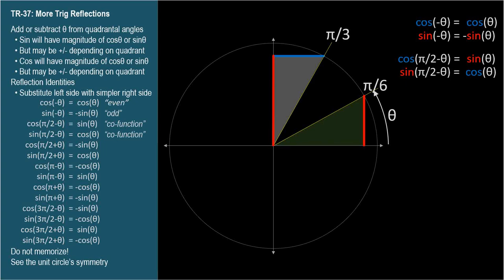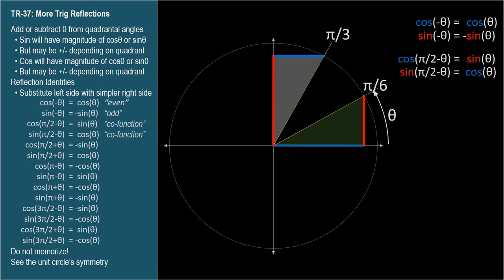The cosine of pi over 6 is square root of 3 over 2 — the large number from TR-15. And the sine of pi over 3 is also square root of 3 over 2. Sine of pi over 6 is 1/2, the small number, and cosine of pi over 3 is also 1/2. Each angle's cosine is its complement's sine. See TR-13Z for a more thorough discussion.